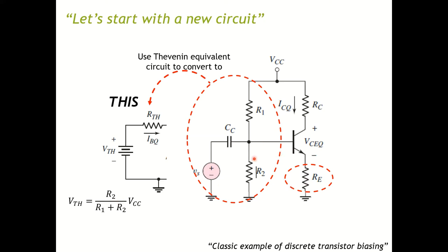So R2, which is this resistance here, divided by the total resistance of R2 and R1, multiply by VCC. And the Thevenin equivalent resistance equals R1 parallel with R2. So these are the two equations that you have there.